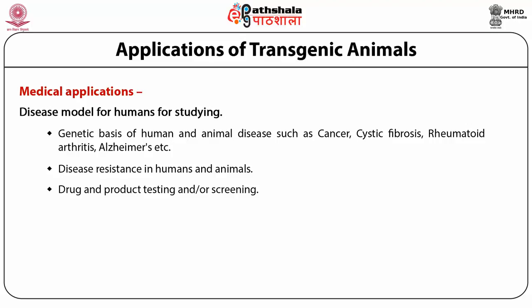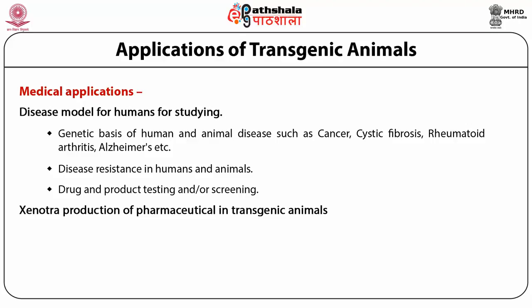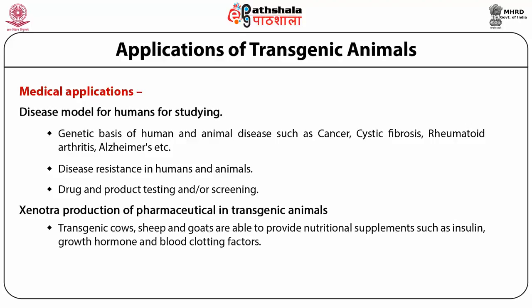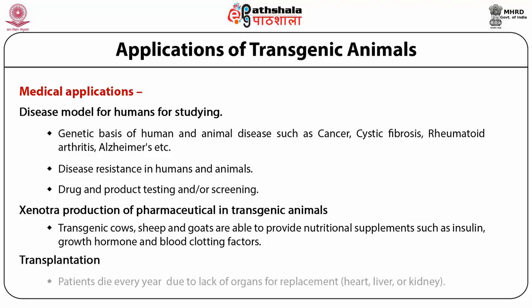Transgenic animals are used for the production of pharmaceuticals. Transgenic cows, sheep and goats are able to provide nutritional supplements such as insulin, growth hormone and blood clotting factors. In transplantation, patients die every year due to lack of organs for replacement. Transgenic pigs, in particular, are being used as alternatives for transplanted organs.